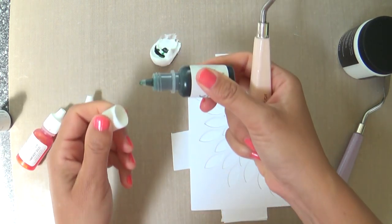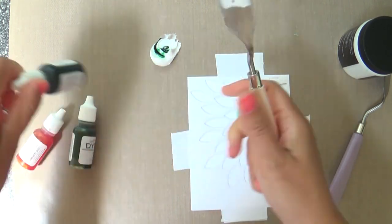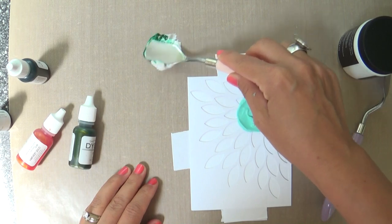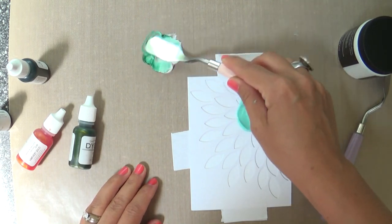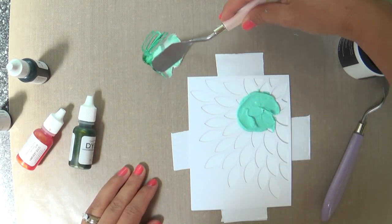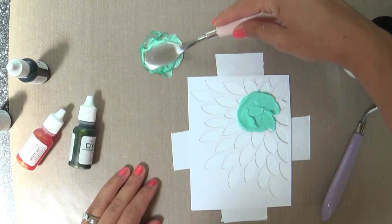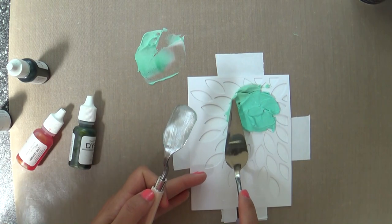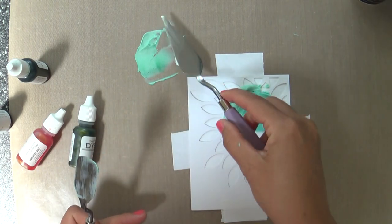You know you can also use your ink pads if you don't have reinkers. If you just like smush your ink pad like press it against your craft mat it will put a little ink on there. It might take a few presses to get as much. The reinkers definitely are a lot more potent but if you don't have reinkers you definitely can do this.